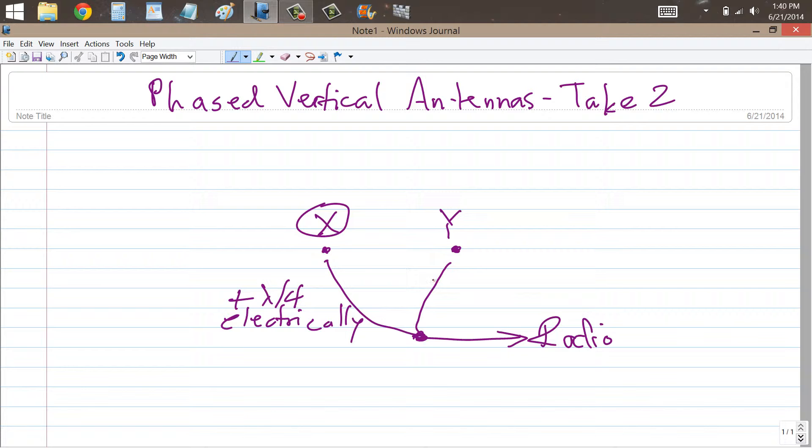You make this line one quarter of a wavelength shorter, this line over here to Y, one quarter of a wavelength shorter than the section that goes to X.